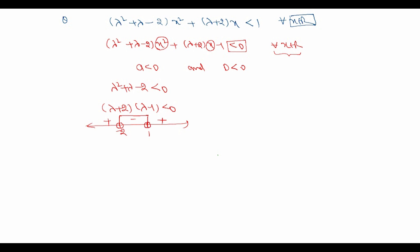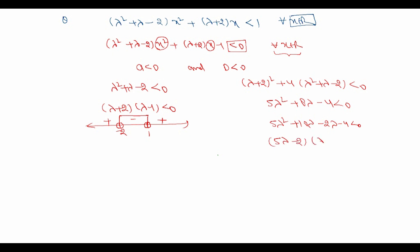Now applying condition D < 0: we get (λ + 2)² + 4(λ² + λ - 2) < 0, which simplifies to 5λ² + 8λ - 4 < 0. Factorizing: 5λ² + 10λ - 2λ - 4 < 0, giving (5λ - 2)(λ + 2) < 0. The roots are -2 and 2/5, so using the sign chart the condition gives λ ∈ (-2, 2/5).